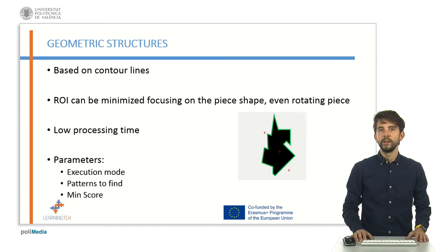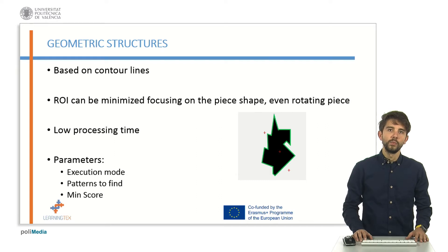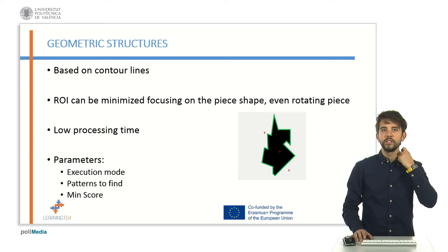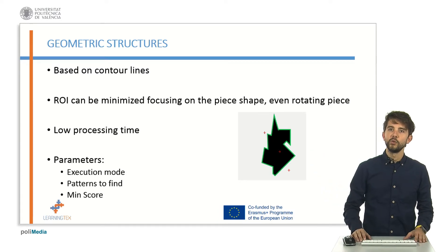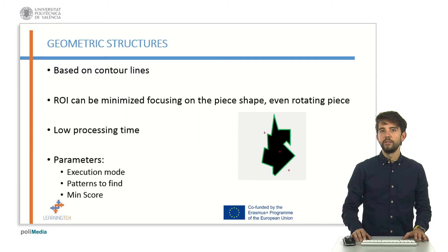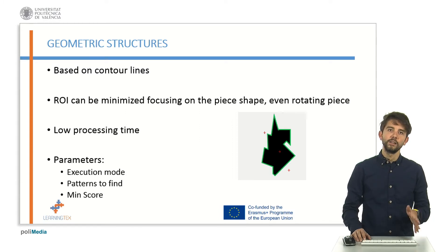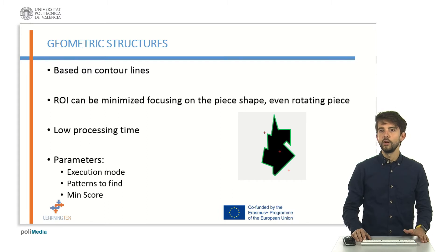With some parameters predetermined in each software, some information about the image is provided. As seen in the image on the slide, the geometric structure function works by locating the figure similar to the pattern and providing information such as reference point, angle, scale, and similarity percentage.